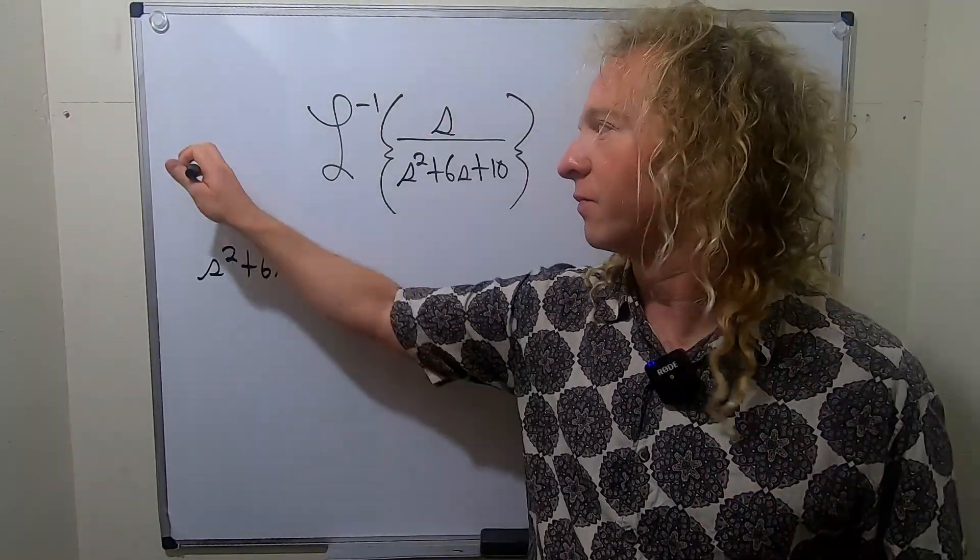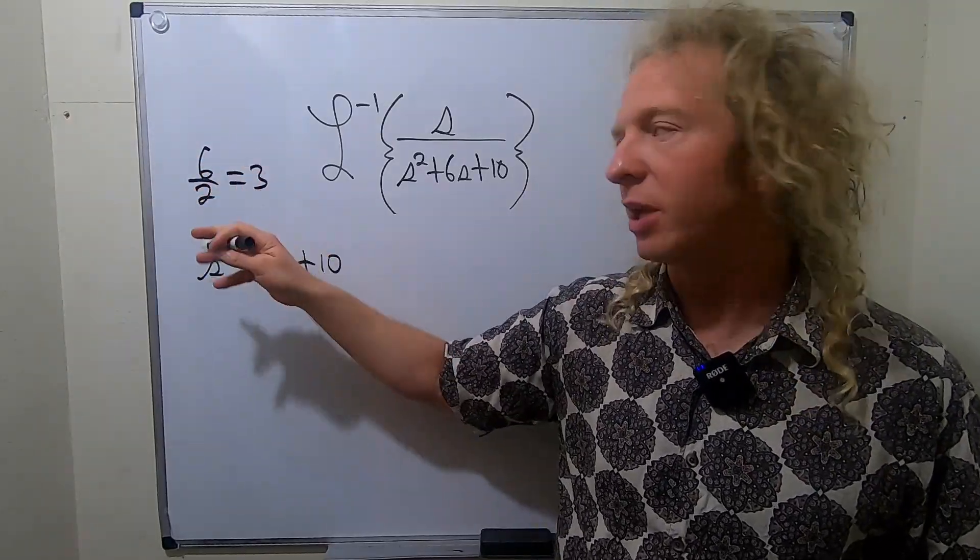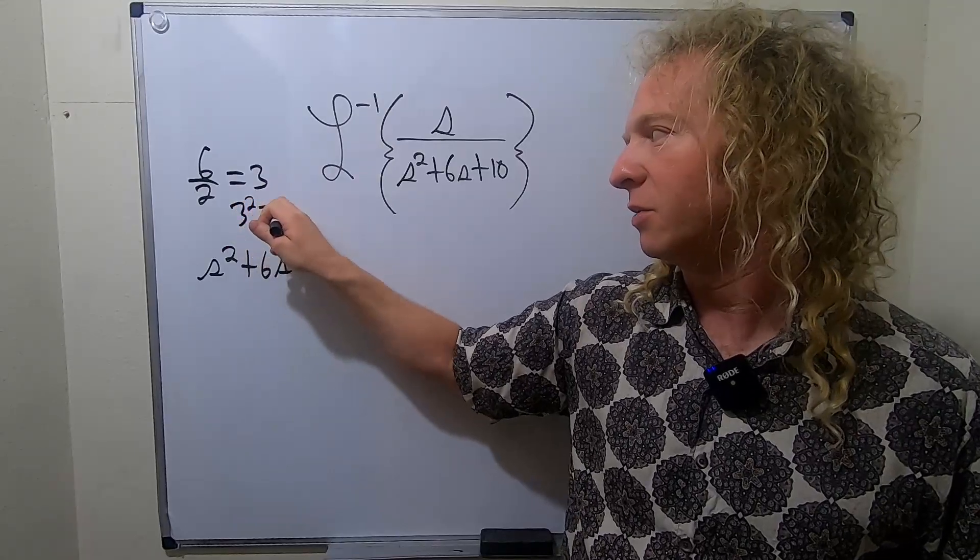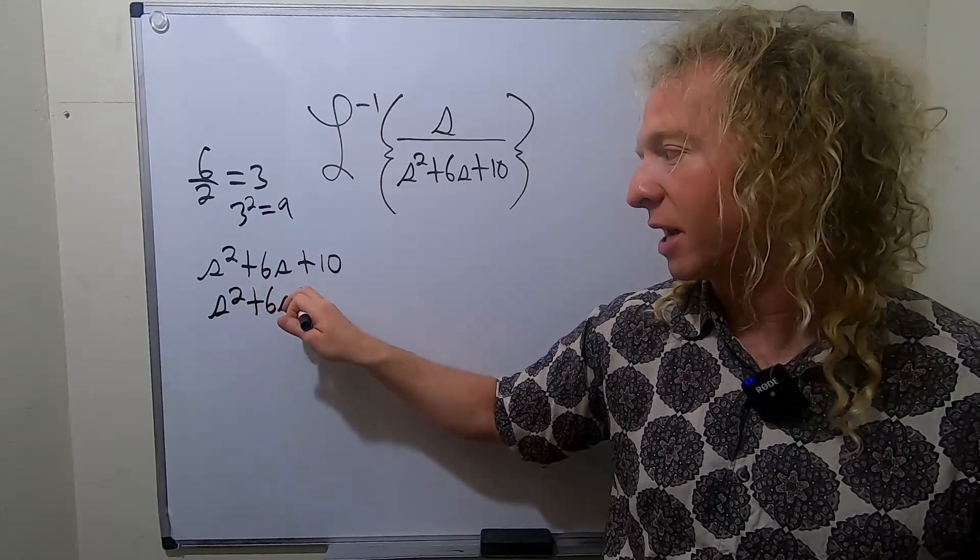So 6 over 2 is 3. And if you square the 3, you get 9. So 3 squared equals 9. So now we're going to write s squared plus 6s and then we'll add a 9 here.